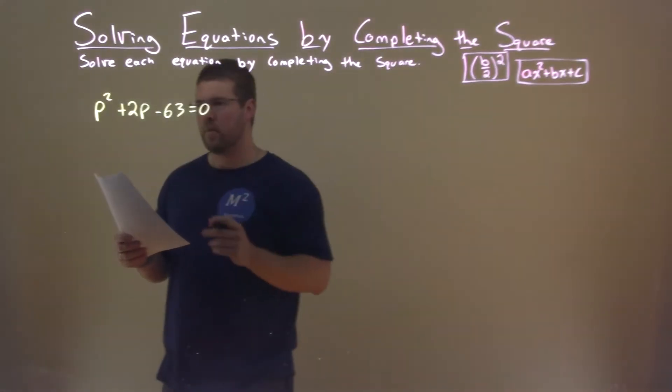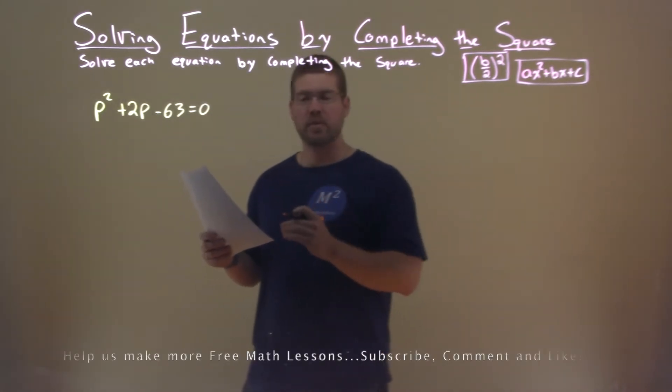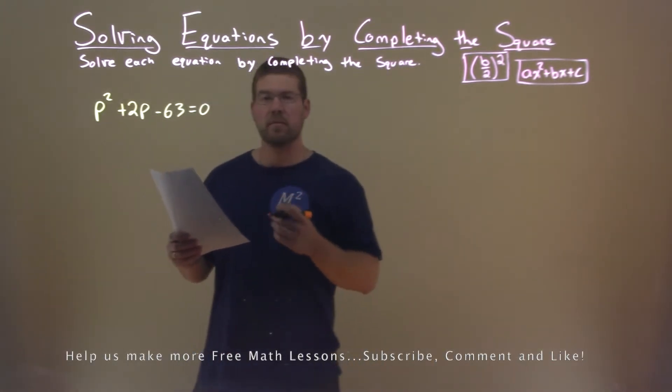We're given this problem right here, p squared plus 2p minus 63 equals zero, and we're going to solve this by completing the square.